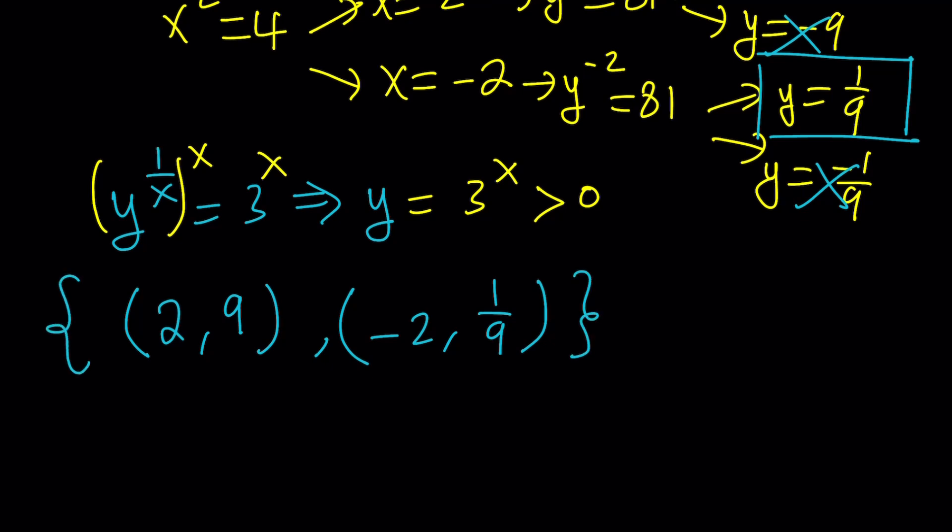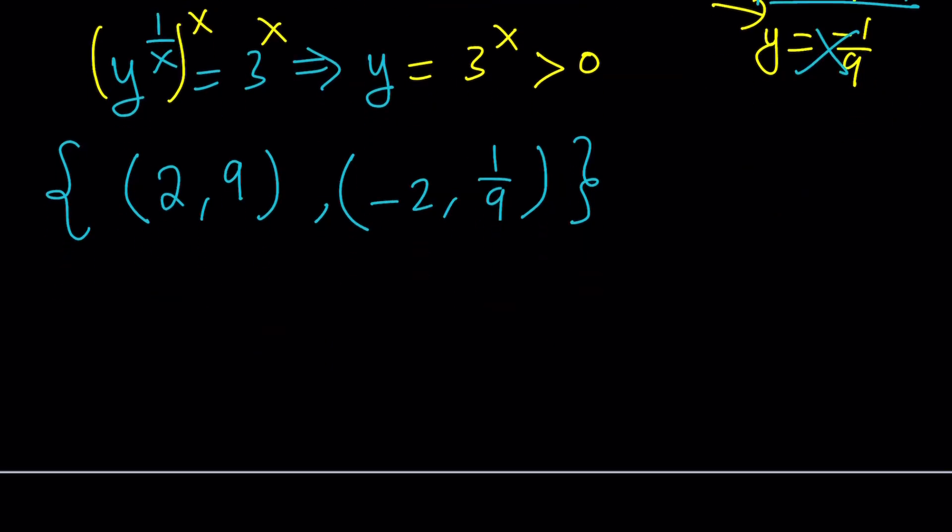Obviously, if y is negative, then here's the problem. You could also look at it this way: if y is negative, there's no way you're going to get 3 by raising it to any power, because x and y are, in this case, real numbers.